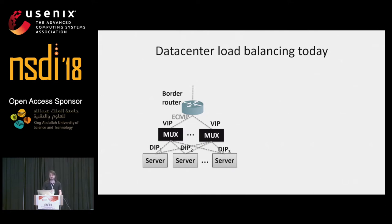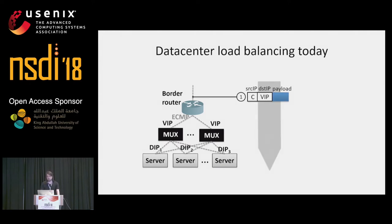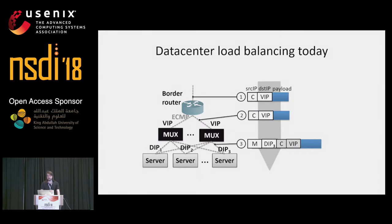The muxes speak BGP to the border router and advertise the service's virtual IP as being accessible in one hub. When a packet comes in, it reaches the border router. The border router uses ECMP to forward it to one of the muxes. The mux then encapsulates the packet and sends it over to the server's direct IP, or DIP in short. The server replies directly to the client, bypassing the muxes completely.